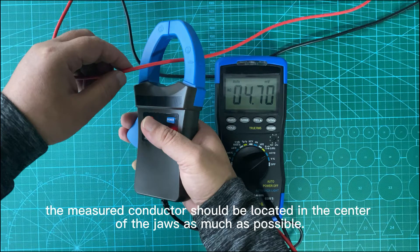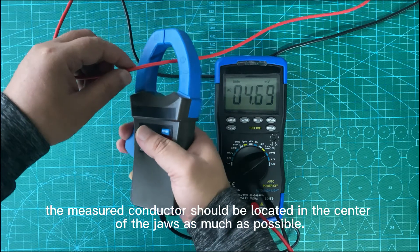In order to ensure the measurement accuracy, the measured conductor should be located in the center of the jaws as much as possible.